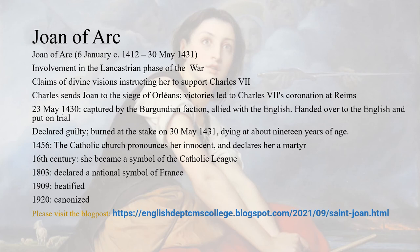Several additional swift victories led to Charles the Seventh's coronation at Reims Cathedral, boosting French morale as mentioned earlier. On 23rd May 1430, Joan of Arc was captured by the Burgundian faction — allies of England. She was later handed over to the English and put on trial by the pro-English Bishop of Beauvais, Pierre Cauchon, on a variety of charges. After Cauchon declared her guilty, she was burned at the stake on 30th May 1431, dying at about 19 years of age.